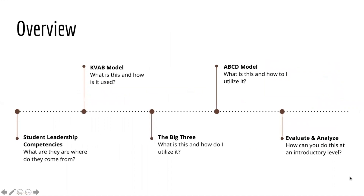As a general overview, we'll start with the student leadership competencies — what they are and where they come from. We'll move toward the KVAB model and discuss what it is and how it's utilized. Then we'll discuss the big three, the ABCD model, and how to evaluate and analyze your competency-based learning outcomes at an introductory level.